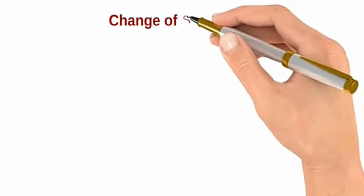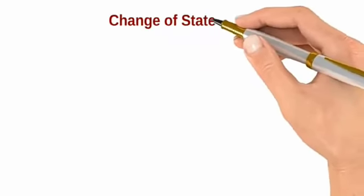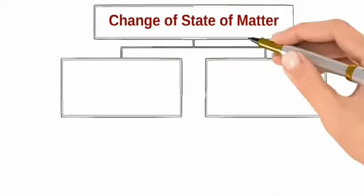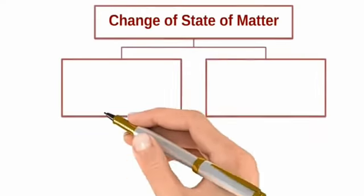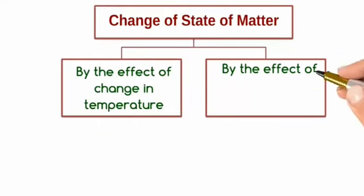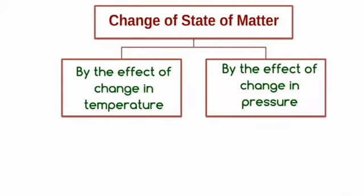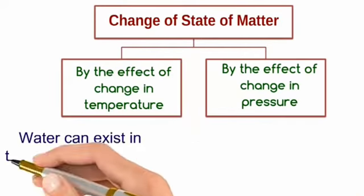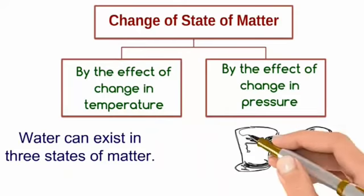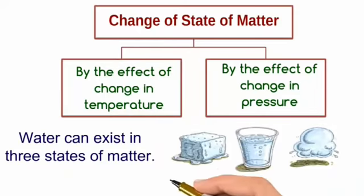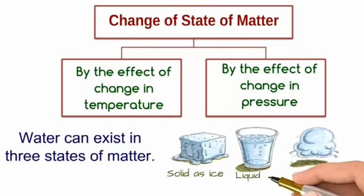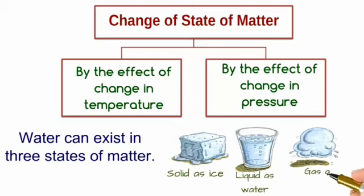Now we will talk about change of states of matter. Change in state of matter is affected by change in temperature and change in pressure. For example, in solid it exists as ice, in liquid as water, and in gas as water vapor.